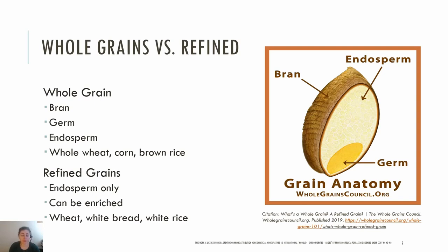Grain products can be enriched, which means some of the missing nutrients are added back in. This includes thiamine, riboflavin, niacin, iron, and folic acid. Labeling terms can get confusing — whole wheat is simply one kind of whole grain. One way to tell if a product is 100% whole grain is to look for the 100% stamp from the Whole Grains Council. You can also look at the ingredient list on the Nutrition Facts panel for '100% whole wheat' or 'whole grain' versus 'enriched wheat flour' or 'white flour.'